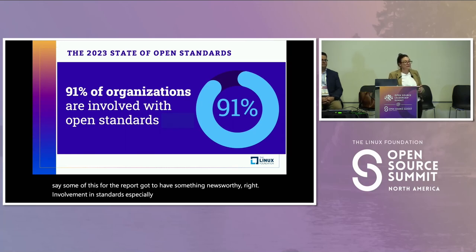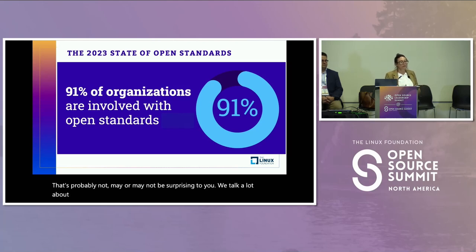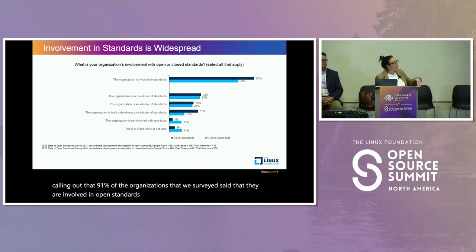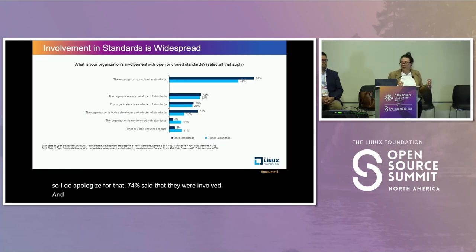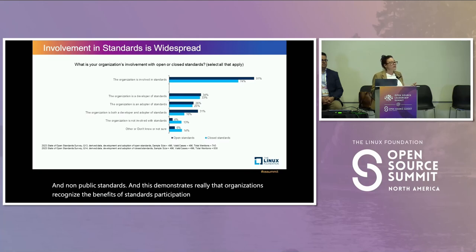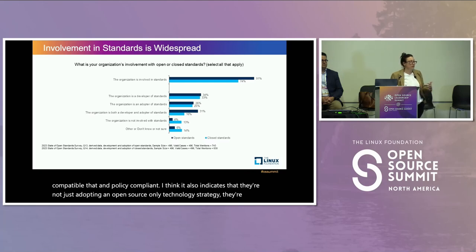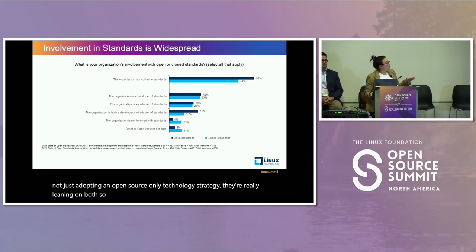Involvement in standards, especially open standards, is really widespread. 91% of the organizations we surveyed said they are involved in open standards. 74% said they were also involved in non-public standards. This demonstrates that organizations recognize the benefits of standards participation — ensuring their products and services are compatible and policy compliant. It also indicates that they're not just adopting an open source-only technology strategy; they're really leaning on both.